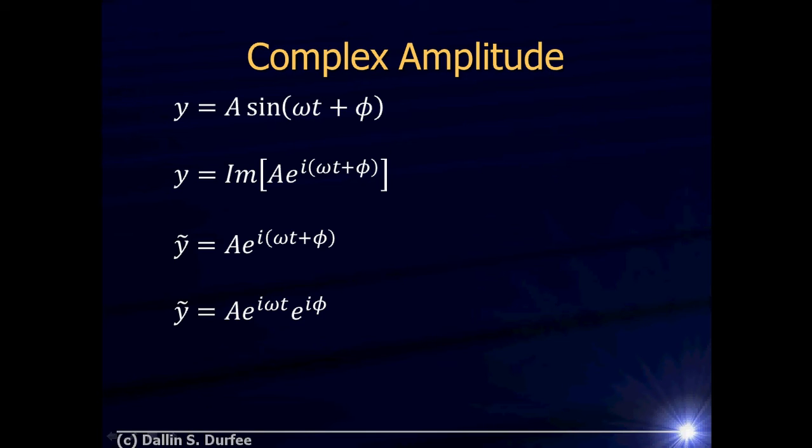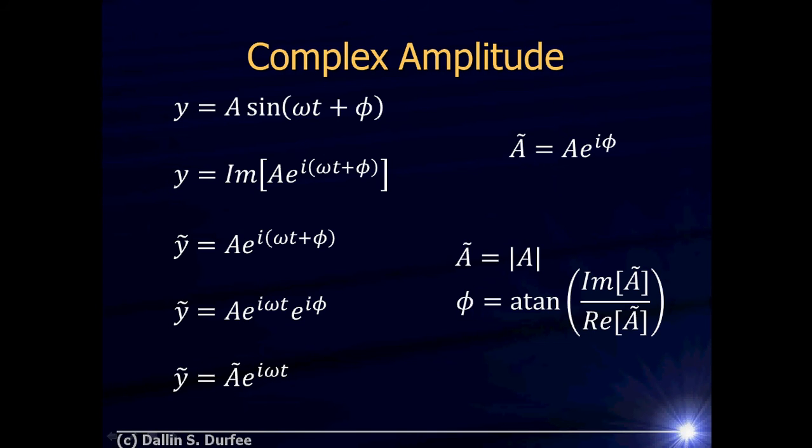Now I can combine the A and the e^(iφ) together to make a complex amplitude because that doesn't change. And then I can write ỹ as just some complex amplitude times e^(iωt). I've taken all of this amplitude and phase part and stuck it in this complex amplitude. If I know the complex amplitude of my wave, I can find A.